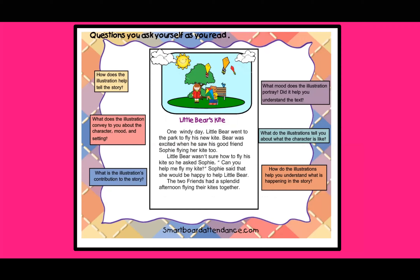Let's look at another example. Before we read, I'm going to look at the illustration — I see a happy sun, some kites, a little bear holding a kite, and a little girl. One windy day, little bear went to the park to fly his new kite. Bear was excited when he saw his good friend Sophie flying her kite too. Little bear wasn't sure how to fly his kite, so he asked Sophie, 'Can you help me fly my kite?' Sophie said that she would be happy to help little bear. The two friends had a splendid afternoon flying their kites together.